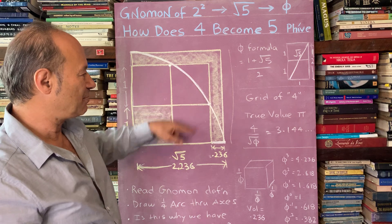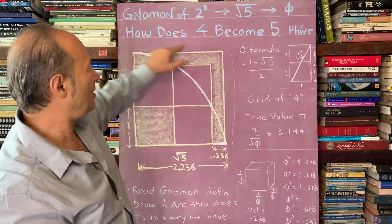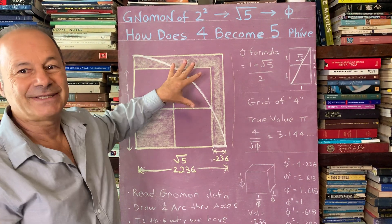Root 5 times root 5. Any square root number multiplied by itself gives that whole number. So that tells us that if the side is root 5, the area here is 5.